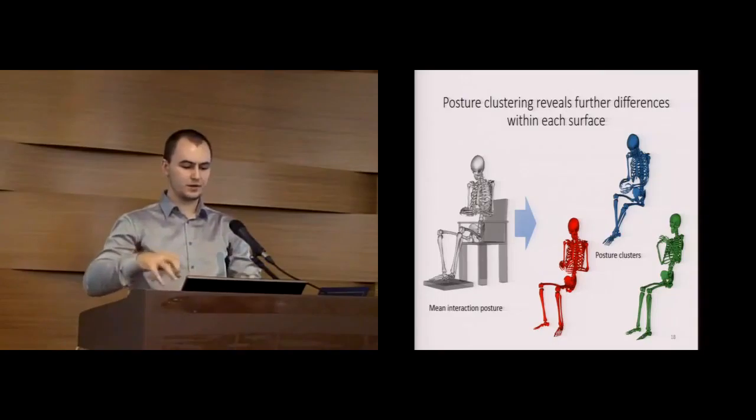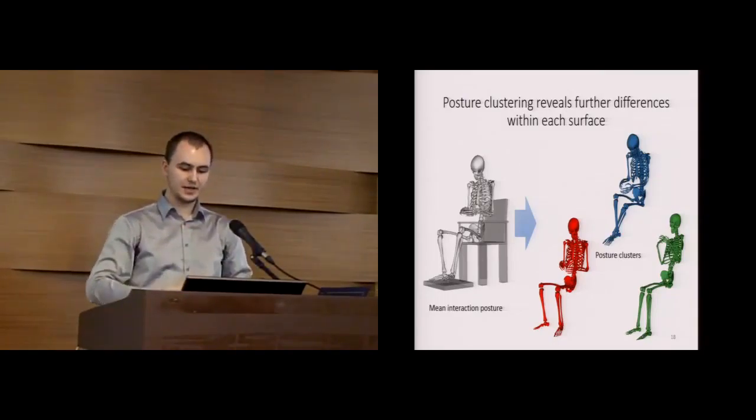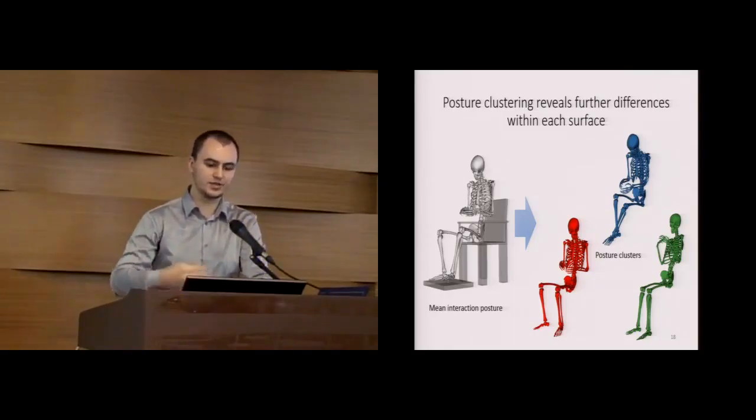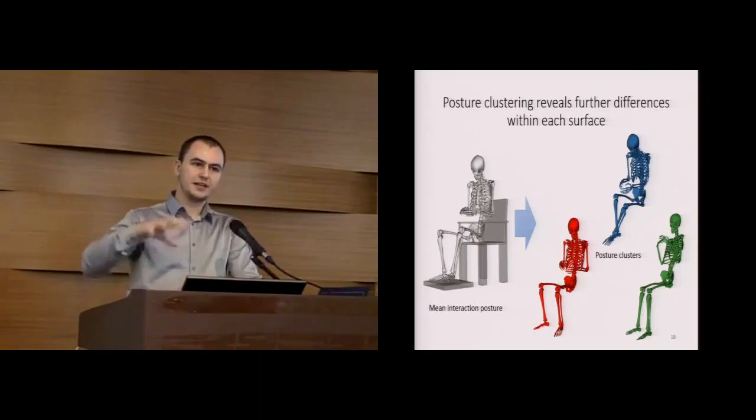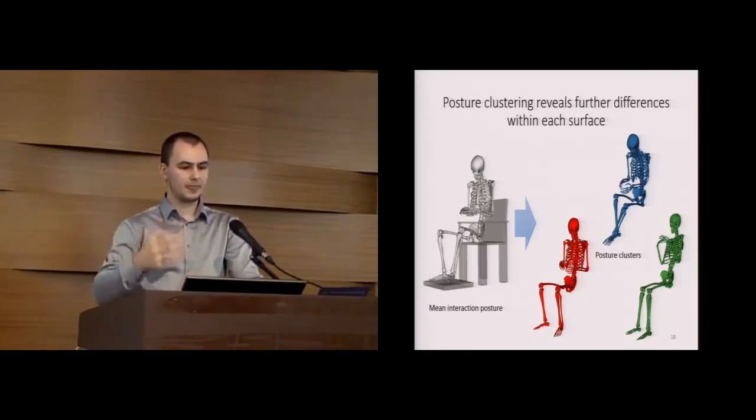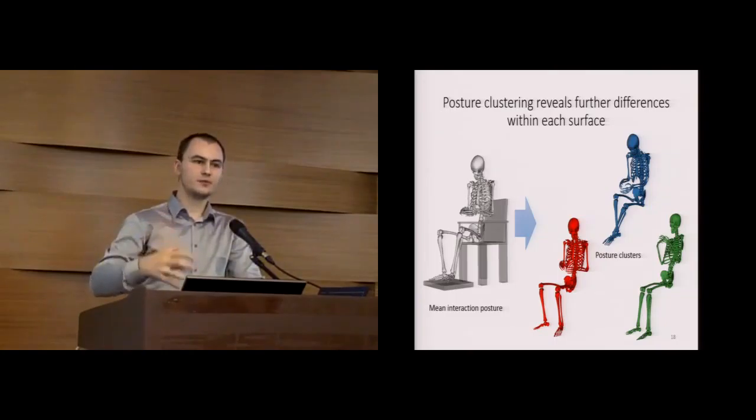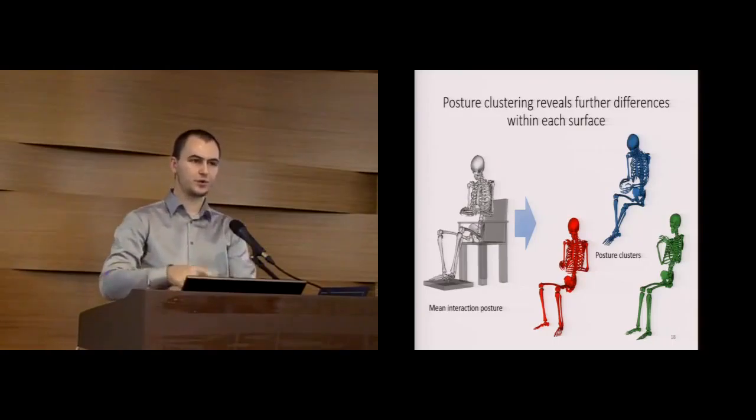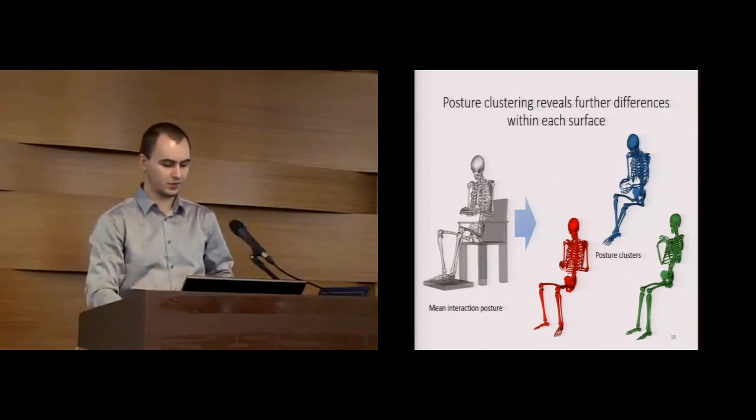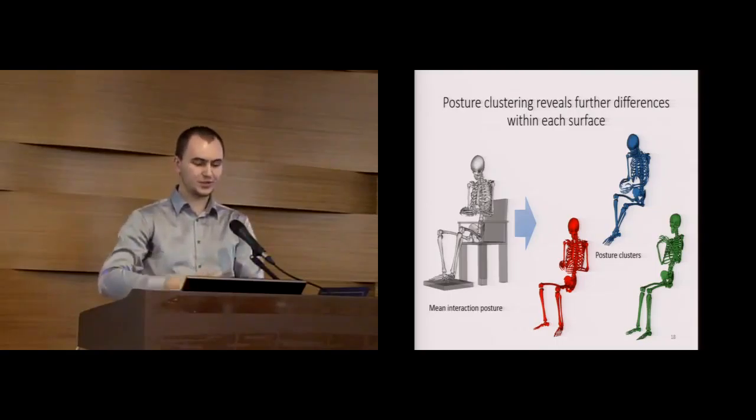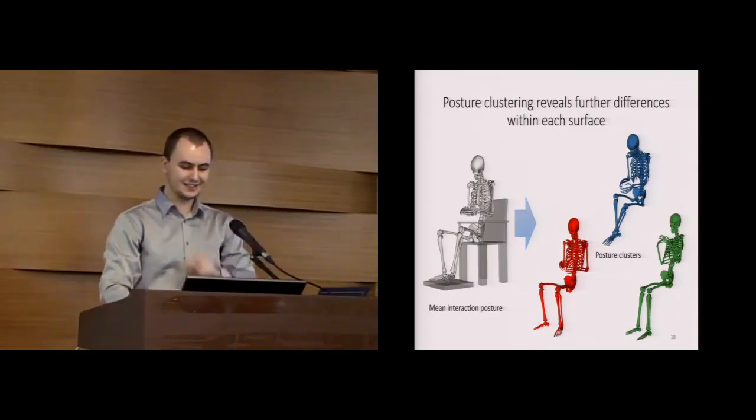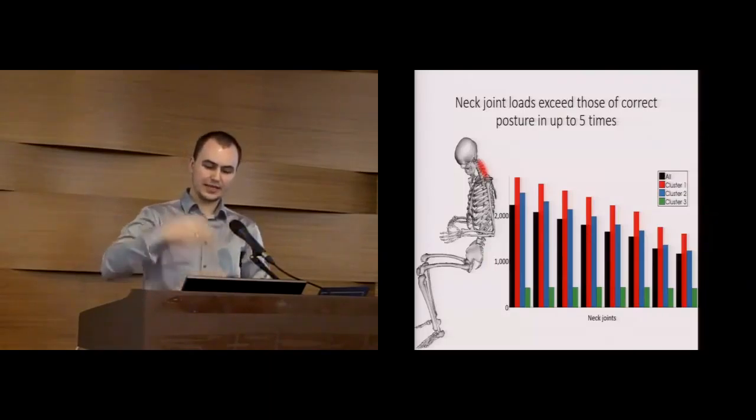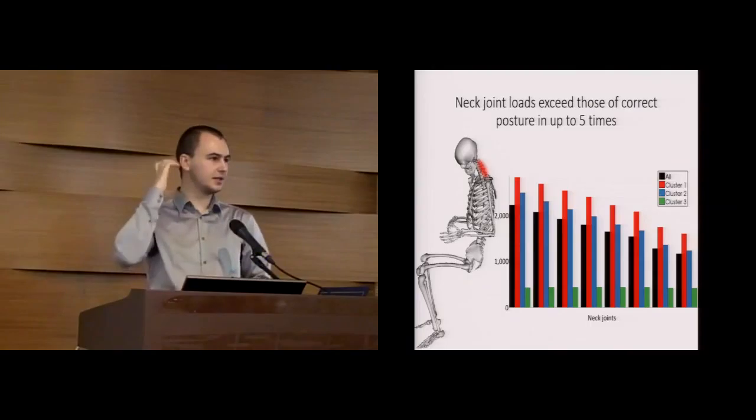We can also describe this further when we separate this mean posture into typical user postures. As you remember in our study we did not impose any constraints on the posture. To identify what are typical postures, we have performed clustering on the inverse kinematics data. This clustering shows that, for example, here you can see mean posture for smartphone two-hands interaction and three typical postures for interaction with smartphone. Although these posture clusters look similar, it is not the case.